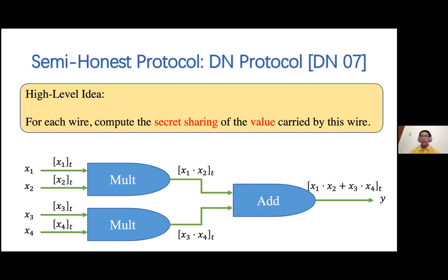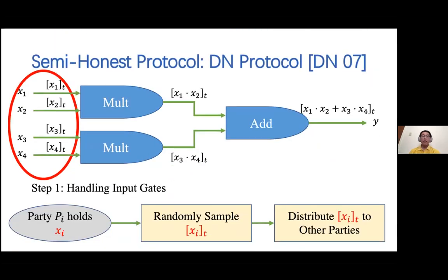To make this idea work, we need to handle the following four kinds of gates: input gates, multiplication gates, addition gates, and output gates. The first step is handling the inputs—we need to transform each input value to a secret sharing. For each input X_i held by party P_i, party P_i generates a random degree-T sharing of X_i and distributes the shares to other parties.